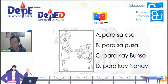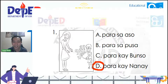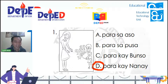Tama ba ang kanilang sagot? Sabi din ni Ruth: D. Sabi ni Isaiah: D. Sabi ni Journey: D. Sabi ni Rona Grace: D. Ang tamang sagot ay tama kayo — Letter D. Ang mga bulaklak ay para kay nanay. Ang gagaling naman ng mga nasa online, ang gagaling ng mga mag-aaral natin.